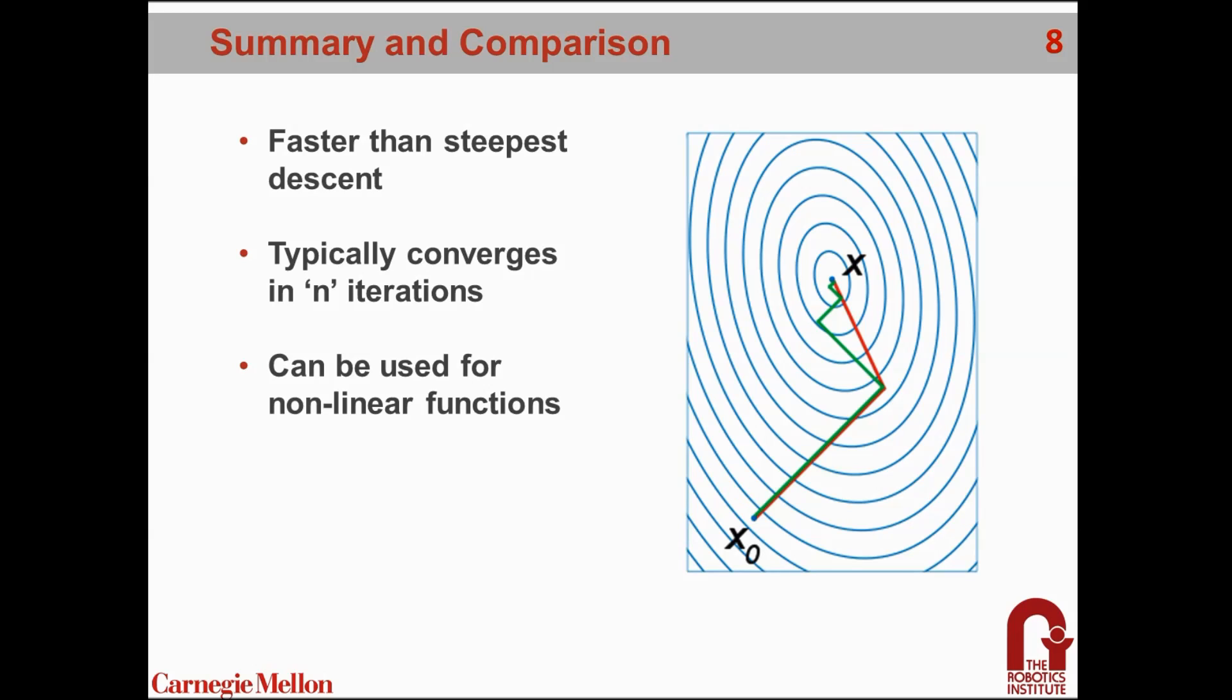In summary, conjugate gradient is a much better way than steepest descent for most optimization problems. As we saw in the MATLAB example I showed, it got to the minimum of the function in just two steps, which is what this red line is showing as opposed to this green line, which is steepest descent. You can see that takes a much more zigzaggy motion. Conjugate gradient typically converges in n iterations. In our example, n was two because we had two variables, x1 and x2.